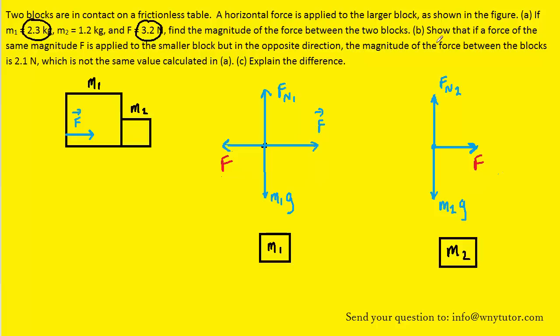Now in part B, we are told that a force of the same magnitude is applied to the smaller block but in the opposite direction. So that means instead of this force acting to the right on mass 1, it's now going to be acting to the left on mass 2. So let's adjust the picture accordingly.